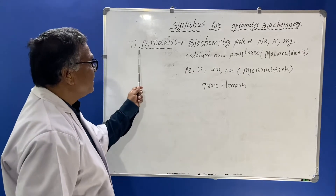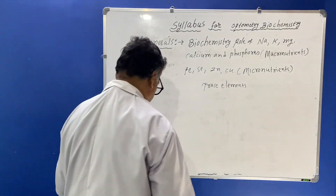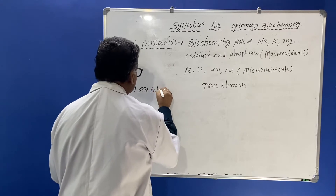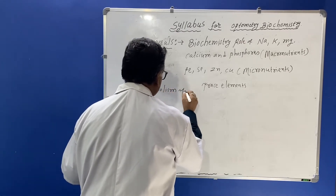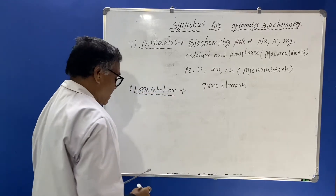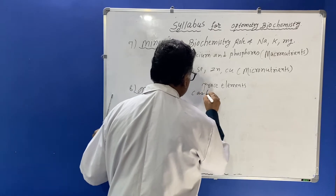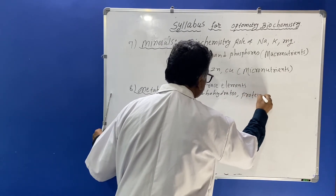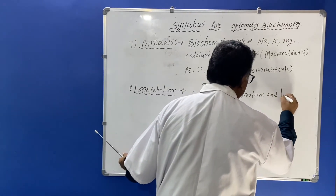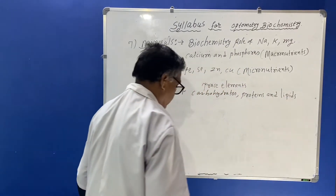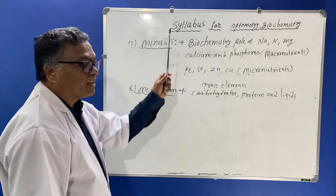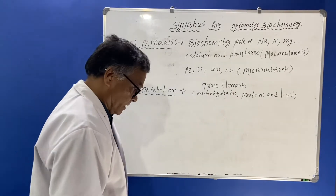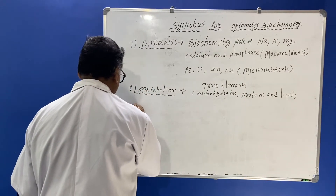After studying the chemistry of carbohydrates, proteins, and lipids, you have to study the metabolism of carbohydrates and lipids. This metabolism chapter follows the chemistry chapters. You should also know the next chapter on hormones.